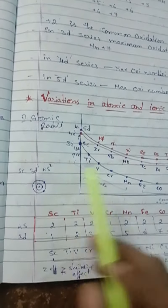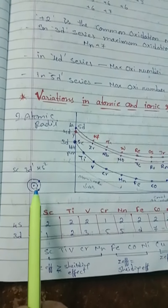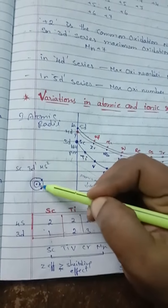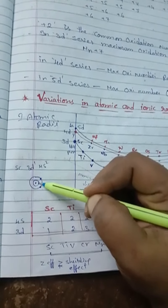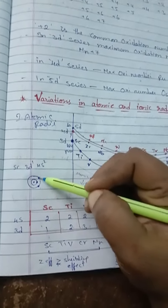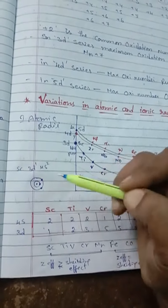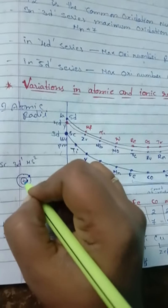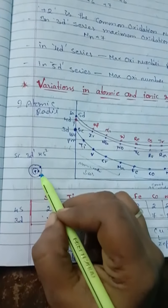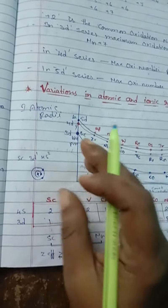The question is: why does atomic radii first decrease in a series? In the outermost shell, two electrons are present, and in the inner 3D shell only one electron is present. This one inner electron cannot shield the attraction of the two outer electrons towards the nucleus.